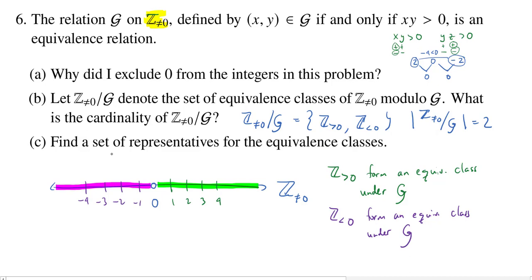All right. Finally, we want to find a set of representatives for the equivalence classes. So you have to remember what that means. So you write down all the equivalence classes. Here, we have two of them. And a set of representatives is when you choose one element from each equivalence class. So we need to choose one positive integer and one negative integer.